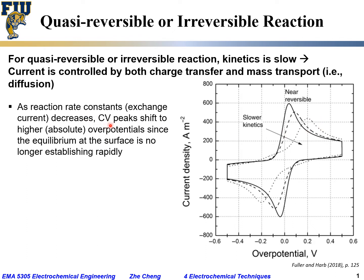The CV peak, as you can see, shifts to higher overpotential. Here we are not plotting absolute potential; we are plotting overpotential. So as the reaction becomes more and more irreversible, the peaks shift to higher potential values. Since equilibrium at the electrode surface is slow and no longer established rapidly, it needs time for the surface reactant to be consumed completely to reach the peak. Remember, the peak is when the surface reactant concentration is exhausted.